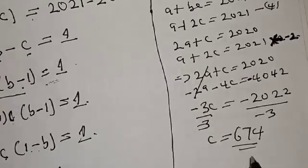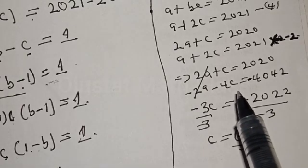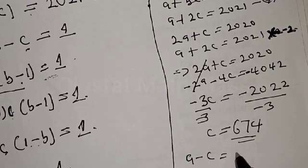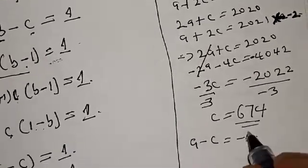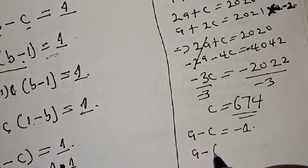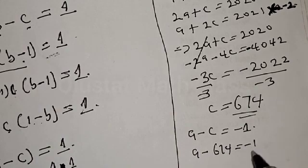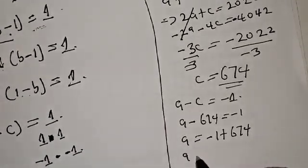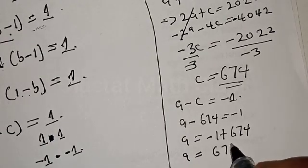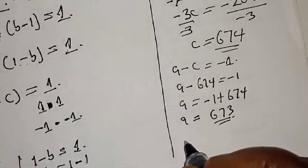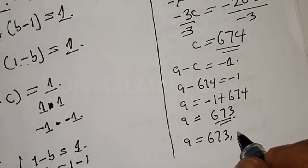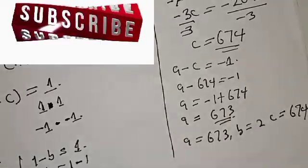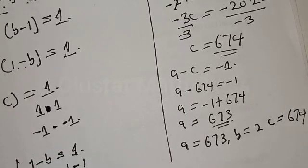We've found C equals 674 and B equals 2. Substituting into A minus C equals minus 1: A minus 674 equals minus 1, so A equals minus 1 plus 674, giving A equals 673. Therefore from the second case: A equals 673, B equals 2, C equals 674. Those are the integer solutions for A, B, and C from both the first and second cases.